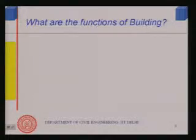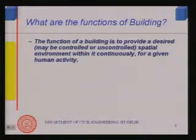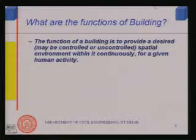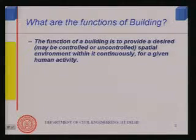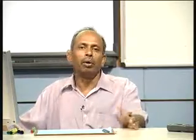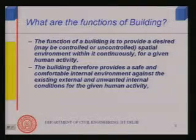The function of a building is to provide a desired spatial environment continuously for a given human activity. This space may be controlled, such as an air-conditioned building where temperature and relative humidity are regulated, or uncontrolled, like an ordinary building with no temperature or humidity control. The building must provide us a space in which human activity continues and must supply the environment we desire.